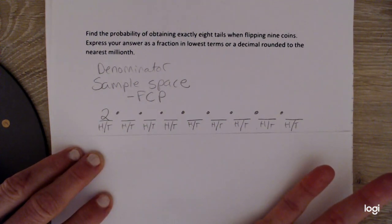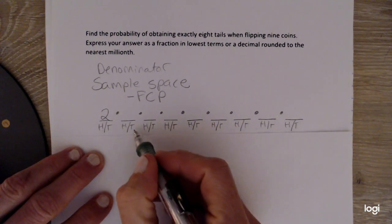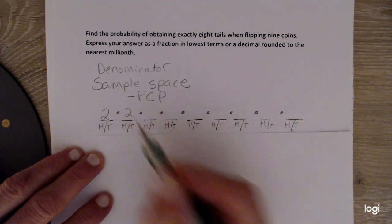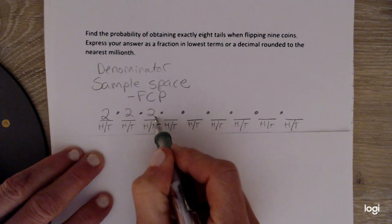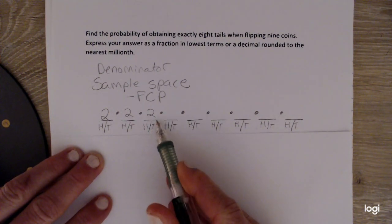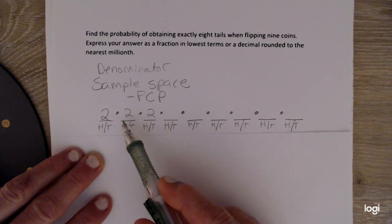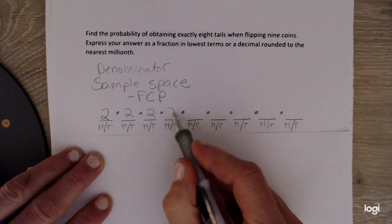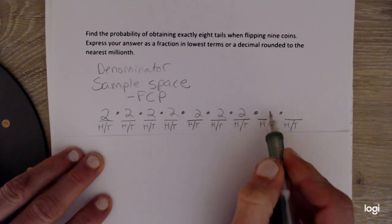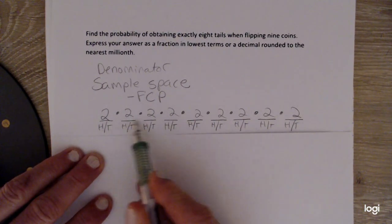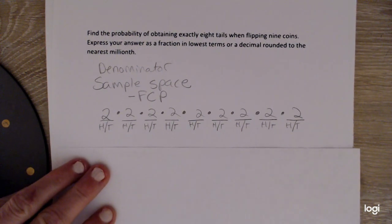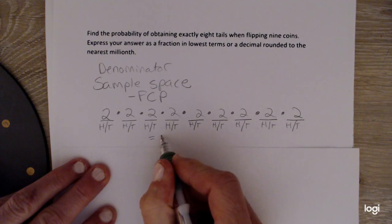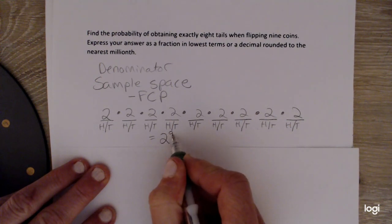And then for the second flip, I also have two outcomes. And for the third flip, I also have two outcomes, heads and tails, and so on. So you'll see that each of these slots will be filled with the number 2. And we want to multiply straight across. So a shortcut for that is 2 to the 9th power.